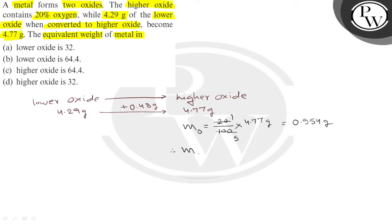So, what should be mass of metal? It must be 4.77 minus 0.954. These are masses of oxygen and metal in higher oxide.